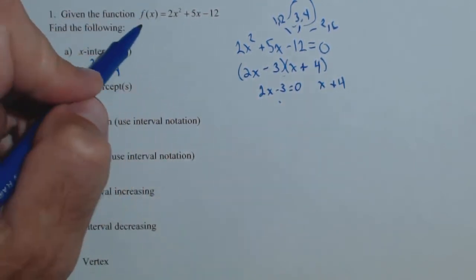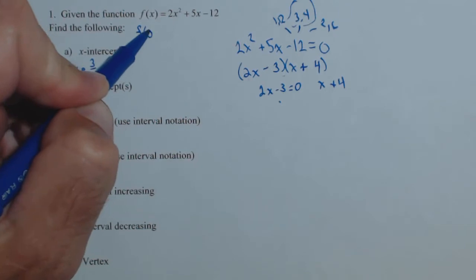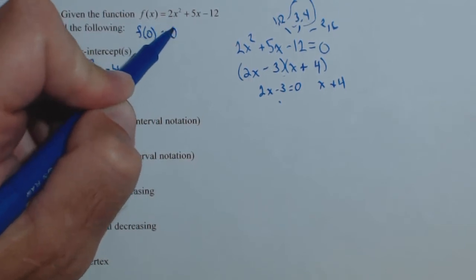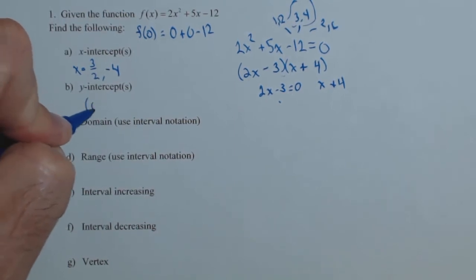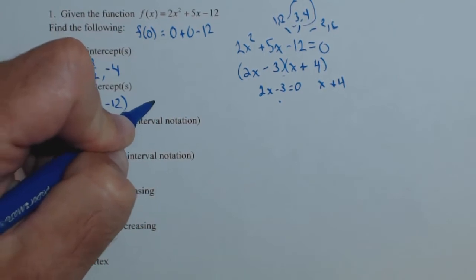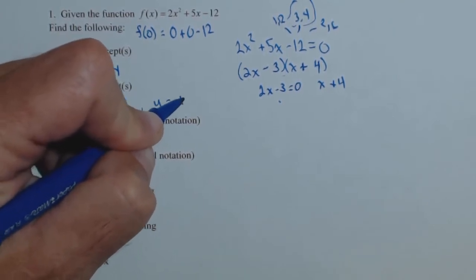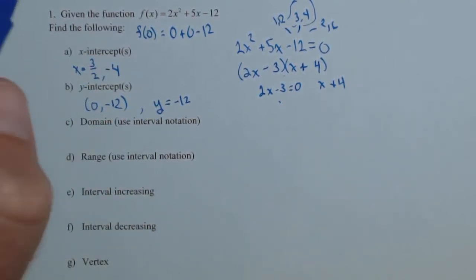The y-intercept is when we put in 0 for x. So we're going to get 0 plus 0 minus 12. So the y-intercept is the point 0, negative 12. Or for this particular problem, if you write it in as y equals negative 12, that works as well.